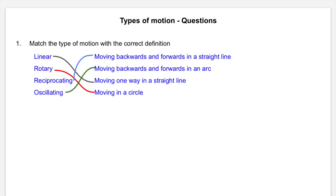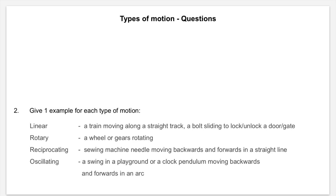A common mistake that a lot of people make is to get reciprocating and oscillating mixed up. That's because they both move backwards and forwards, but you've got to remember that reciprocating does it in a straight line whereas oscillating moves backwards and forwards in an arc. People also tend to get linear and reciprocating mixed up — remember that reciprocating means moves backwards and forwards whereas linear is in one direction. The examiner will accept anything that is correct, but my advice is to stick to obvious examples.